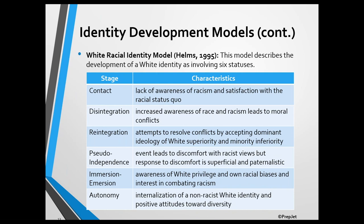People transition to the pseudo-independent status when they're faced with an event that makes them question their beliefs about whites and members of minority groups. It's characterized by a superficial tolerance of minority group members that may be accompanied by paternalistic attitudes and behaviors that actually perpetuate racism. People in the immersion-emersion status search for a personal meaning of racism and an understanding of what it means to be white and to benefit from white privilege. People then transition to the autonomy status when they develop a non-racist white identity, value diversity, and can explore issues related to race and racism without defensiveness.